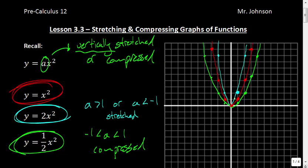The last thing I want to leave you with here is notice how our ordered pairs have changed. The x-coordinates have stayed the same. If we refer to our x value being 1, the ordered pair for the original red function is (1, 1). Our blue function is at (1, 2).